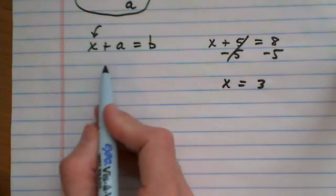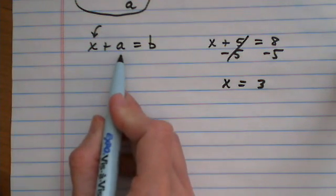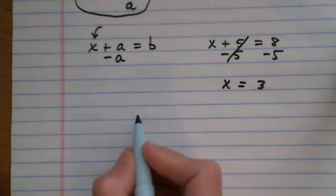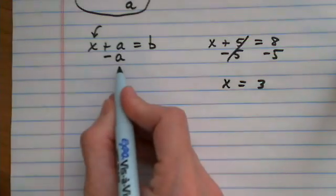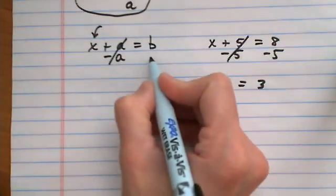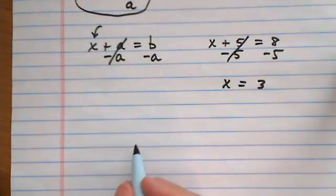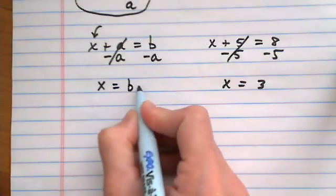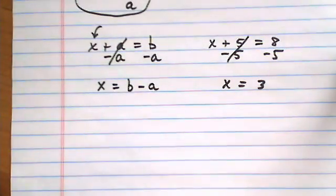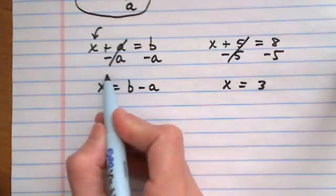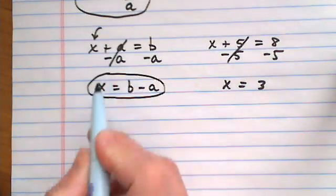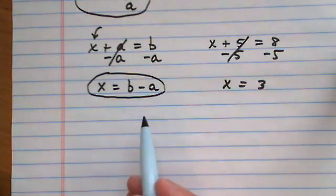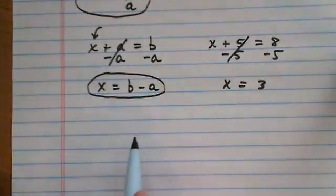I'm going to do the same thing with a and b here. x plus a, I'm solving for x, so I need to get rid of the a. I subtract it off because it's being added. I have to subtract a on both sides. We can't combine b and a, so we write x equals b minus a. It doesn't really look like an answer, but that is the solution for x.